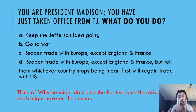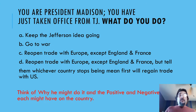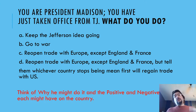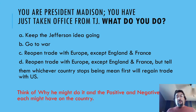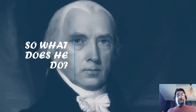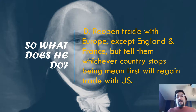Scenario number one: You are President Madison. You have just taken office from Thomas Jefferson. What do you do? Do you A, keep the Jefferson idea going? Do you B, go to war? Do you C, reopen trade with Europe except England and France? Or do you D, reopen trade with Europe except England and France, but tell England and France whichever one stops being mean first will regain trade with the United States? What he does is option D — he reopens trade with Europe except England and France, but tells them whichever country stops being mean first will regain trade from the United States.